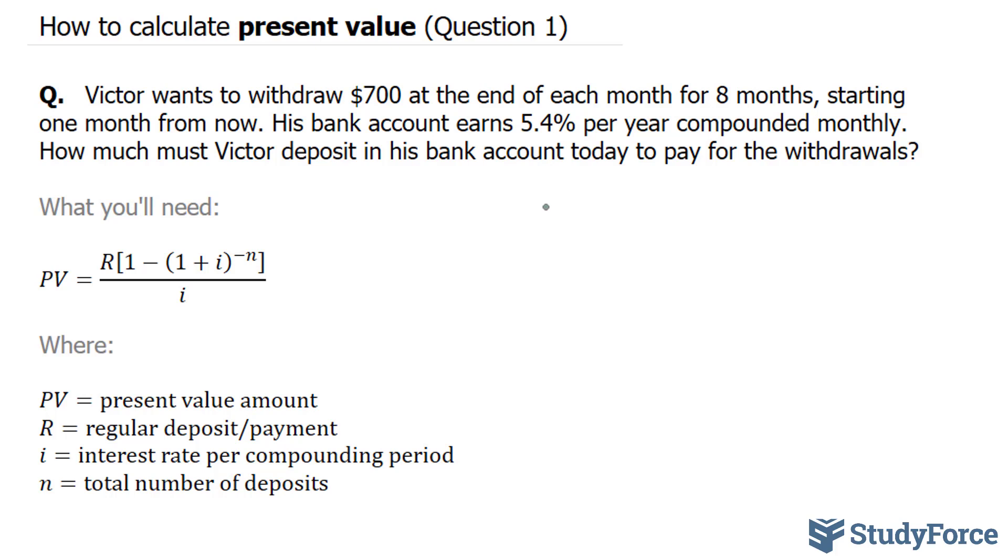we have to use the present value formula, and it is shown below, and all of the letters are defined below as well. So let's start off by denoting what each of these variables are. We know what i is equal to. i is equal to 5.4%.